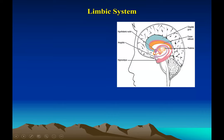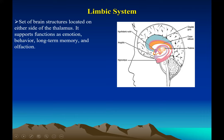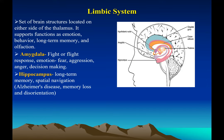The hippocampus is where short-term memory becomes long-term memory — that's why you can recall something that happened when you were five years old. It also plays a role in spatial navigation. In Alzheimer's disease, memory loss and disorientation occur because of lesions in the hippocampus.